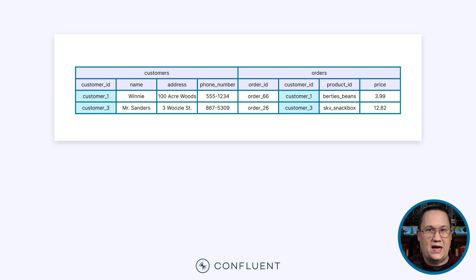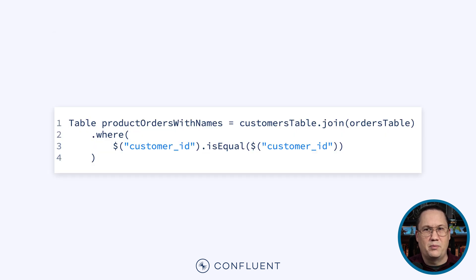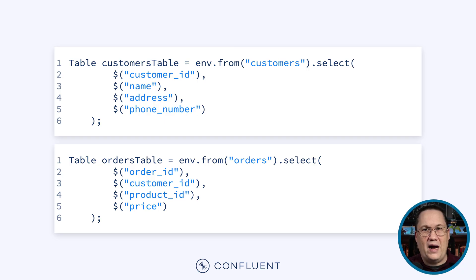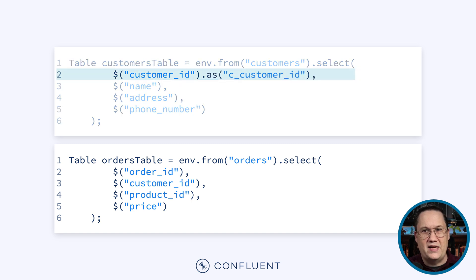If we join the tables using the customer ID, we'll eliminate any rows that don't exist in both tables. This is what is called an inner join. It takes records from the first table and matches them to records from the second table, returning only the rows with a direct match. An inner join can be implemented with the JOIN and WHERE clauses. Except there's a problem — the customers and orders tables both contain a customer ID field. Joining the tables creates a naming collision because the result contains two fields with the same name, and it also makes the WHERE clause ambiguous. To fix this, let's go back to our original table definitions.